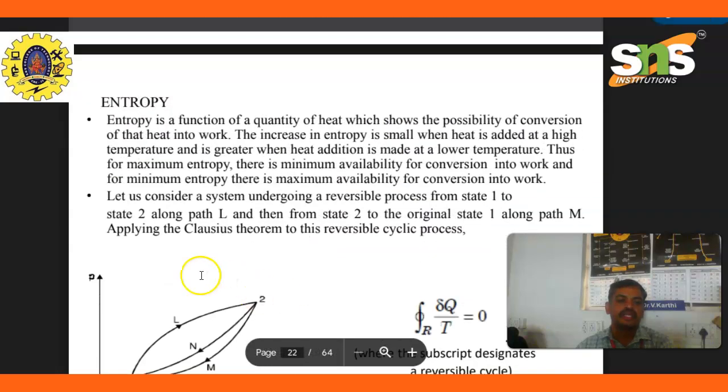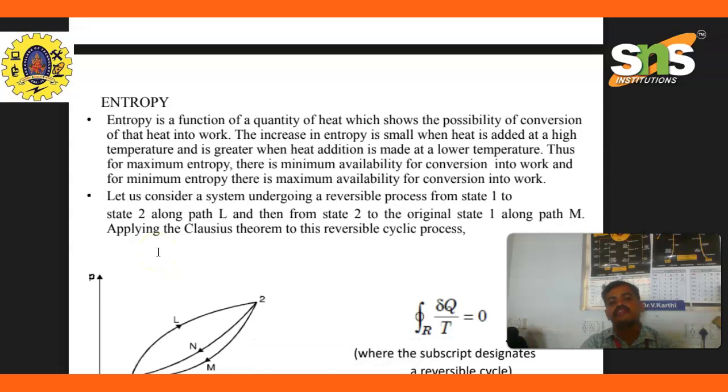Next topic is entropy. Entropy is a function of a quantity of heat which shows the possibility of conversion of that heat into work. Increase in entropy is small when heat is added at high temperature and is greater when the addition is made at lower temperature. Thus, for maximum entropy there is minimum availability for conversion into work, and for minimum entropy there is maximum availability for conversion into work.